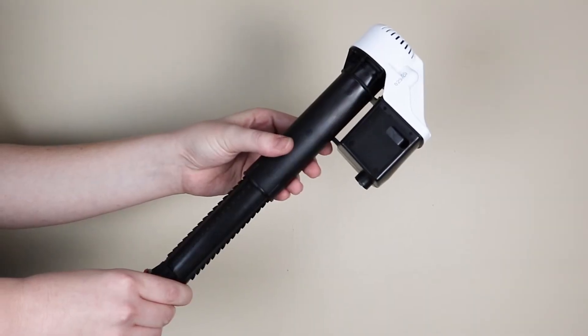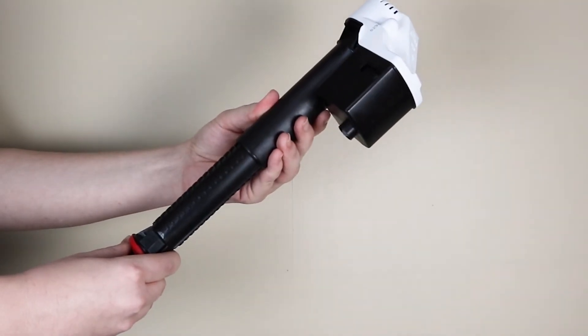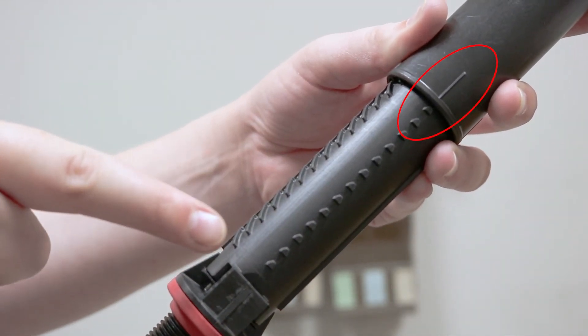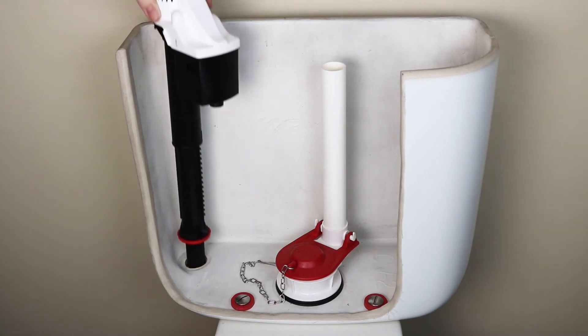Lock the fill valve in place by twisting the upper half clockwise. Make sure the rib on the top of the valve lines up with the pegs on the bottom half. Place the locked valve in the tank.